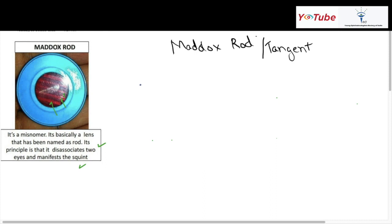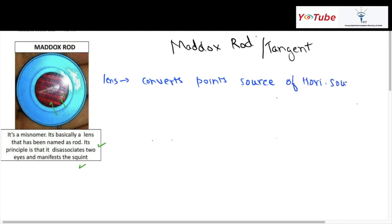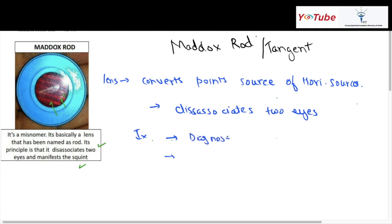We will study about the Maddox rod test. The name is actually a misnomer — it is not a rod but a type of lens. As you can see, there is a red lens with stripes that converts a point source of light into a horizontal line. This is the main principle of the test. It dissociates the two eyes so both eyes function independently. It is used to diagnose phorias and to measure the amount of squint.